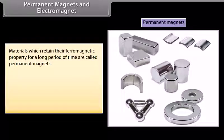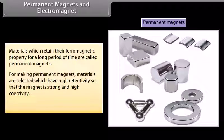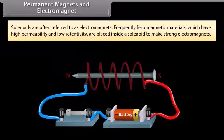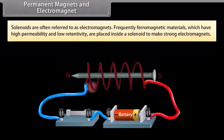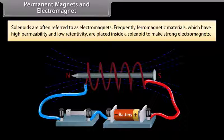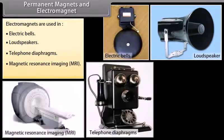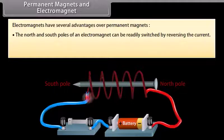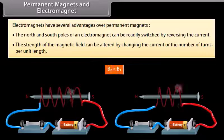Materials which retain their ferromagnetic property for a long period of time are called permanent magnets. For making permanent magnets, materials with high retentivity and high coercivity are selected, for example steel, alnico, and cobalt steel. Solenoids are often referred to as electromagnets; ferromagnetic materials with high permeability and low retentivity are placed inside a solenoid to make strong electromagnets. Electromagnets are used in electric bells, loudspeakers, telephone diaphragms, MRI, and cranes to lift heavy materials. Advantages of electromagnets include: poles can be readily switched by reversing the current, and field strength can be altered by changing the current or number of turns per unit length.